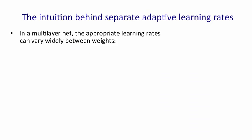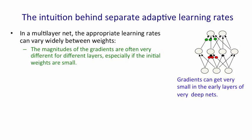Let's start by thinking why having separate adaptive learning rates on each connection is a good idea. The problem is that in a deep multi-layer net, the learning rates can vary widely between different weights, especially between weights in different layers. For example, if we start with small weights, the gradients are often much smaller in the initial layers than in the later layers.